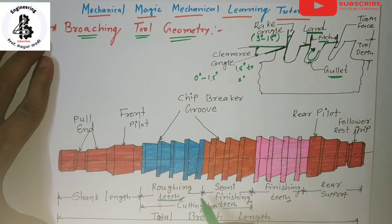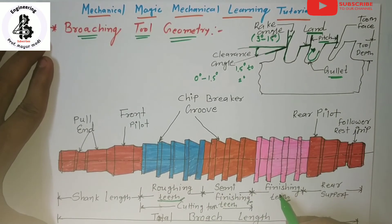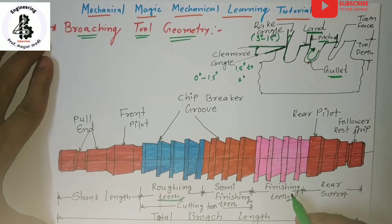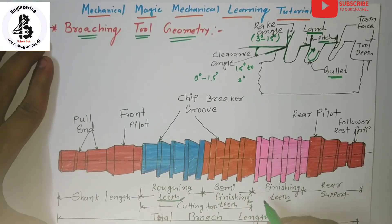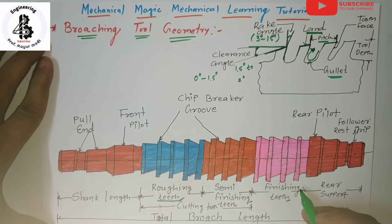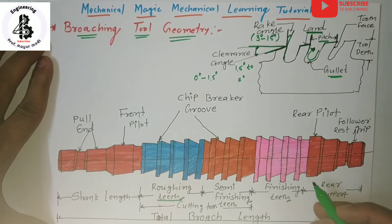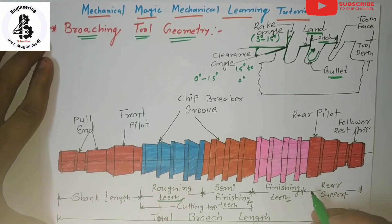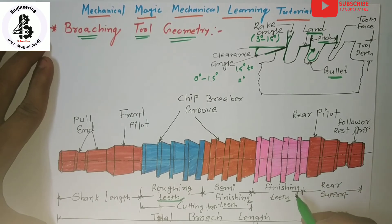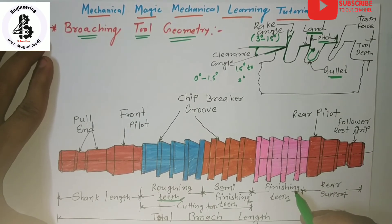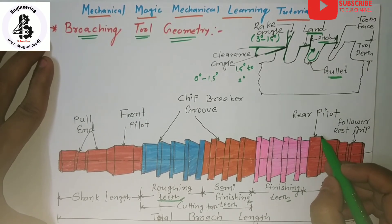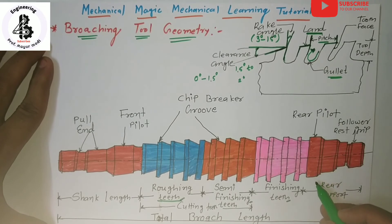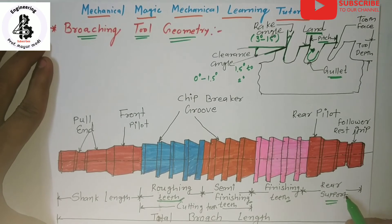After the roughing teeth there is space for the finishing teeth. With the application of the broaching tool you can make single-pass operations, and by single-pass operations you can make a finished product. After the finishing teeth there is the rear pilot, which supports the broach after the last tooth leaves the hole.